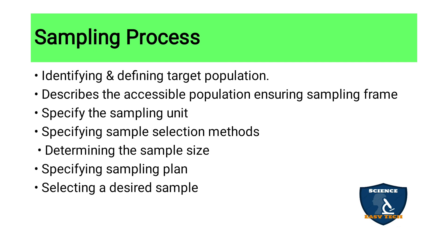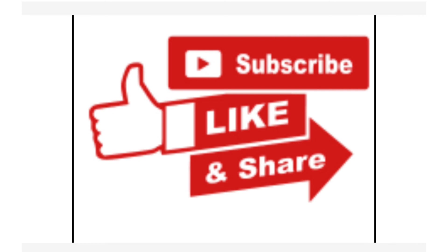To recap, the steps in the sampling process are: identifying and defining the target population; describing the accessible population and ensuring a sampling frame; specifying the sampling unit; specifying sample selection methods; determining the sample size; specifying the sampling plan; and selecting the desired sample. In my next video, I will discuss non-probability sampling methods, probability sampling methods, and all the different sampling methods. I hope this video has been clear. If you like this video, please give a thumbs up, share, and subscribe to Science Easy Tech channel. Previous video links are in the description box. We have created a separate playlist for nursing research and statistics. Thank you, keep supporting Science Easy Tech channel — see you again.